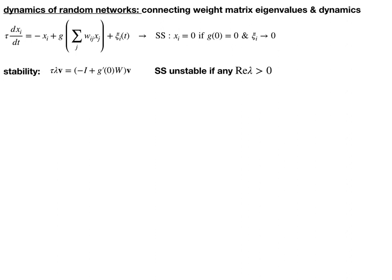And for what follows, we'll assume that g prime of 0 is 1. So the steady state of the whole network is going to be unstable if the real part of lambda is greater than 0. So we'd like to really look for when g prime of 0 times w has eigenvalues with real part that are contained within the interval from minus one to one.